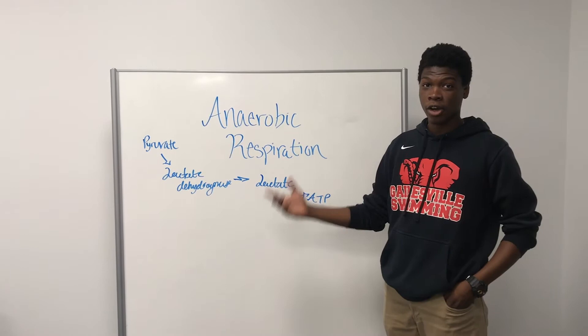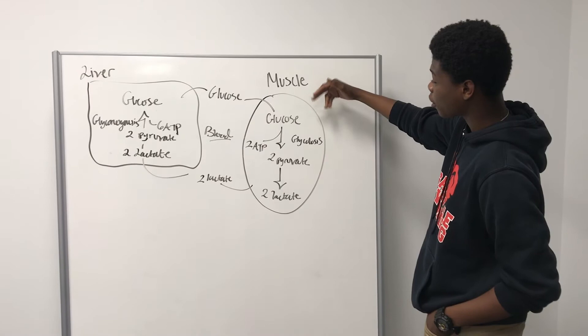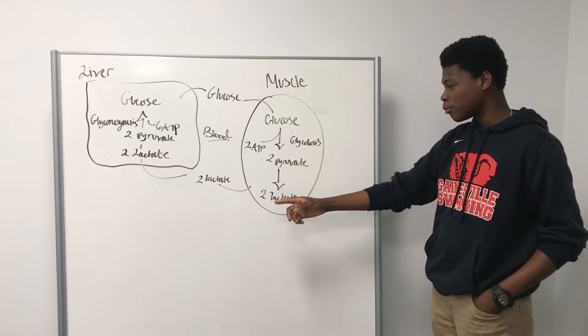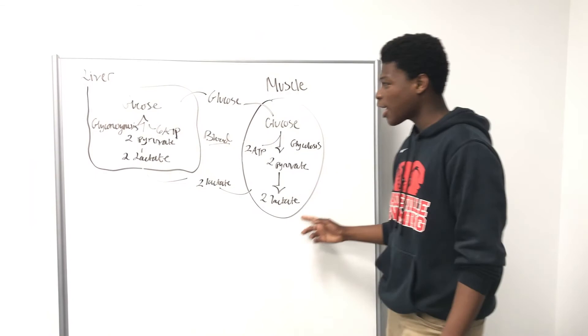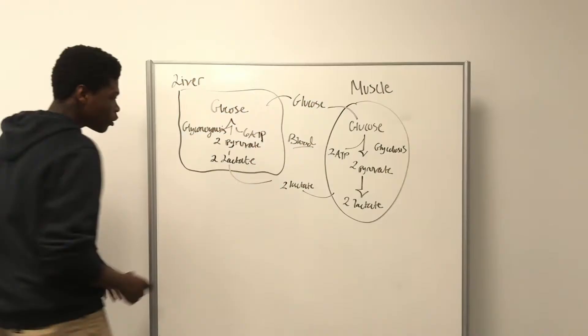How do your cells generate ATP without oxygen? That's a process called anaerobic respiration. Anaerobic respiration takes the pyruvate generated from glycolysis and turns it into lactate using lactate dehydrogenase. Glucose goes into your muscle and is converted to pyruvate through glycolysis, generating 2 ATP. This pyruvate is then turned into lactate through anaerobic respiration. That lactate goes into the liver, where it's converted back into pyruvate, and then the pyruvate is turned into glucose at a cost of 6 ATP. Notice you generate 2 ATP but it costs 6 ATP — that's an expensive process.